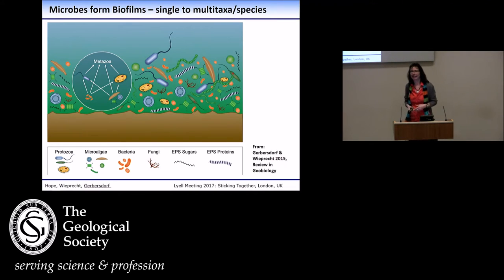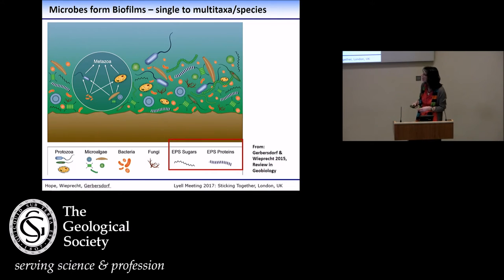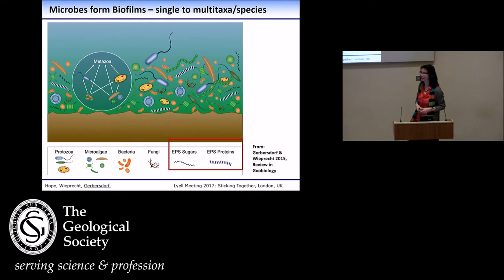This is why we are all here. We know that microbes, bacteria, and micro-algae tend to settle on sediment and form what we call biofilm. In this biofilm, we sometimes have single-species communities made from bacteria, and other times we have multi-taxa, multi-species communities. But for all of them, it's common that they are embedded in a matrix of so-called extracellular polymeric substances. Quantitatively, proteins and sugars are the largest compounds.